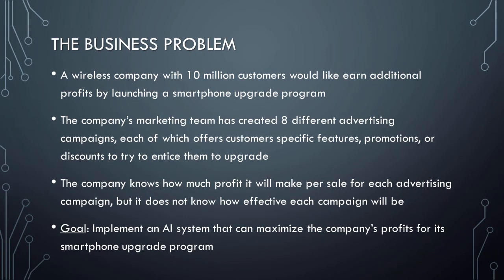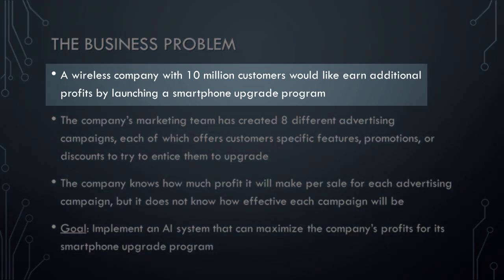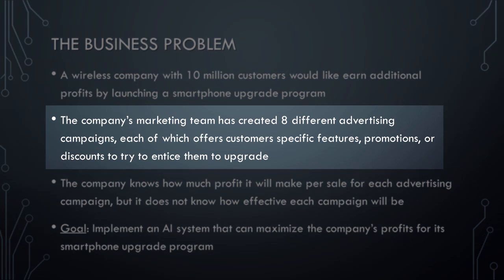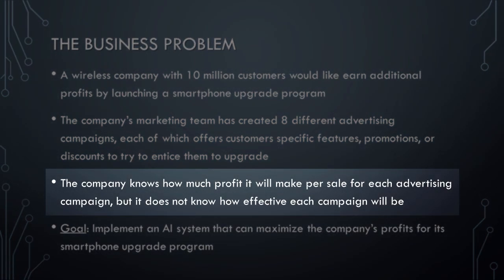Before we begin writing code in Python, let's discuss the business problem that we will be solving in this video by using an AI system based on Thompson sampling reinforcement learning. Imagine that you work for a wireless company that has 10 million customers. The company has decided that it would like to earn additional profits by launching a smartphone upgrade program. The company's marketing team has created eight different advertising campaigns, each of which offers customers specific features, promotions, or discounts if they will upgrade their smartphone. The average profit will vary from campaign to campaign, and the company knows how much profit it will make per sale for each advertising campaign.